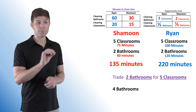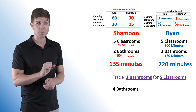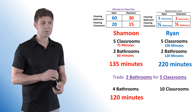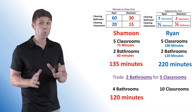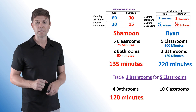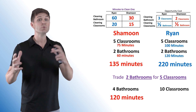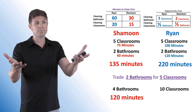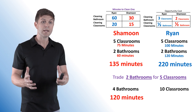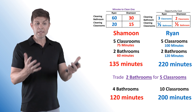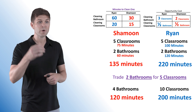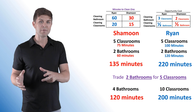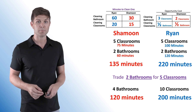Shamoon now cleans four bathrooms — he has the comparative advantage there — while Ryan cleans ten classrooms. The four bathrooms take Shamoon 120 minutes. He was working 135 minutes before, so he's gained 15 minutes to do something else — like clean another classroom. Ryan is now down to 200 minutes, saving 20 minutes from his previous 220. Both of them have extra time, which allows them to consume beyond their production possibility frontier.